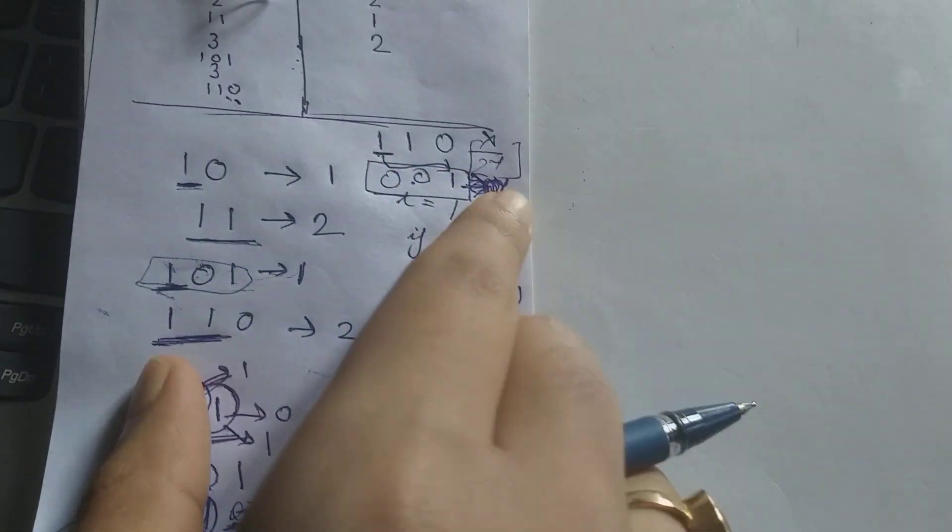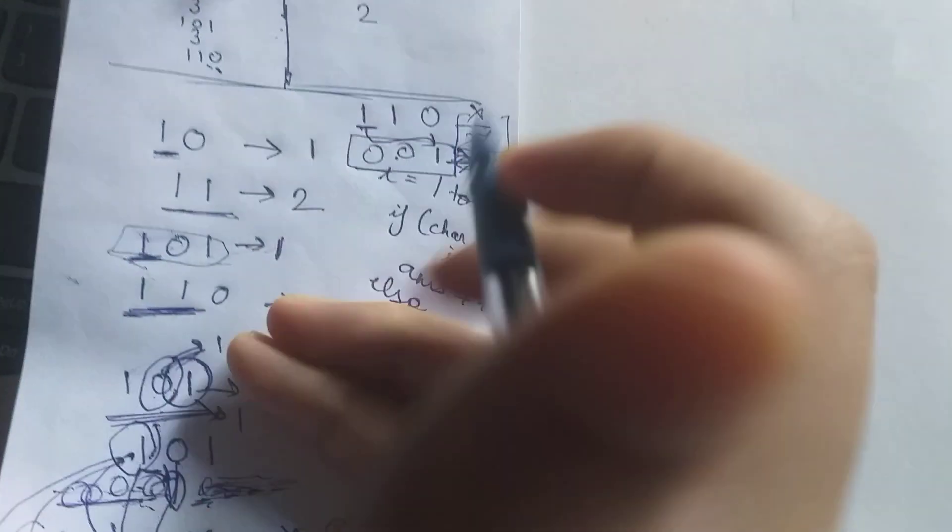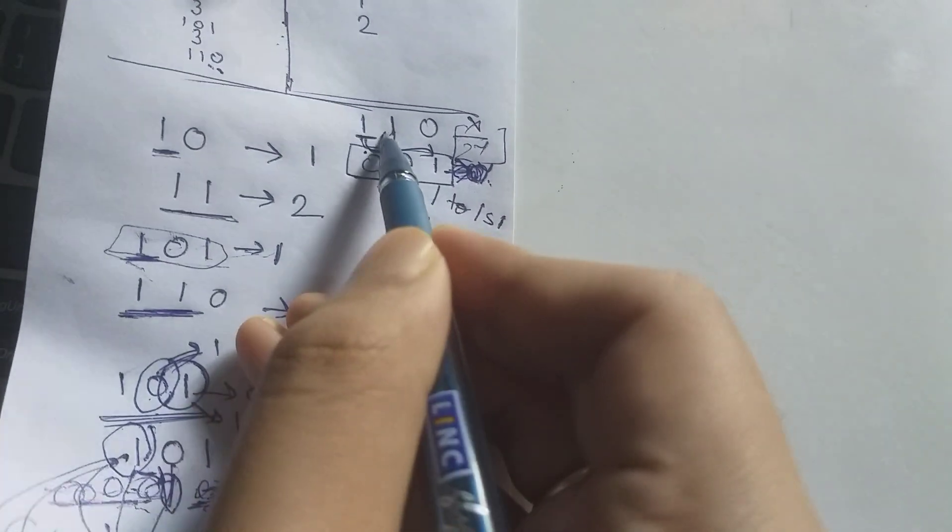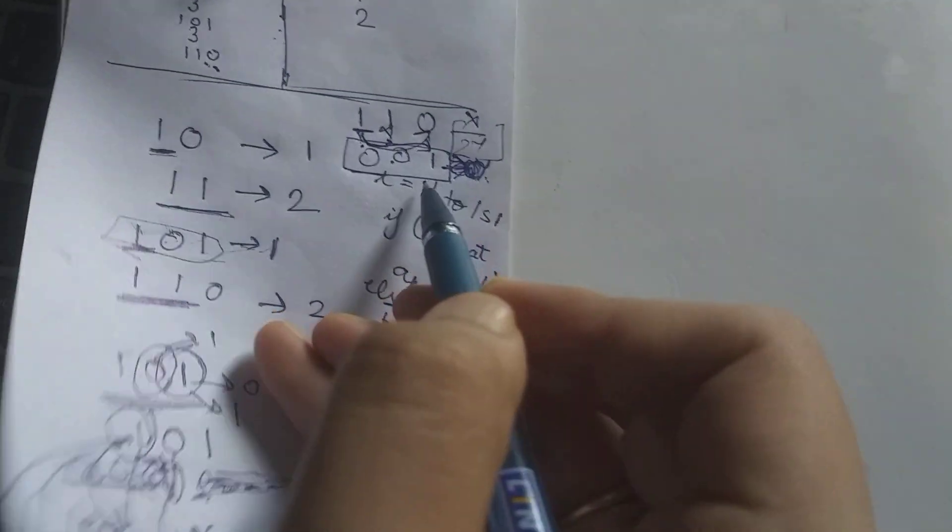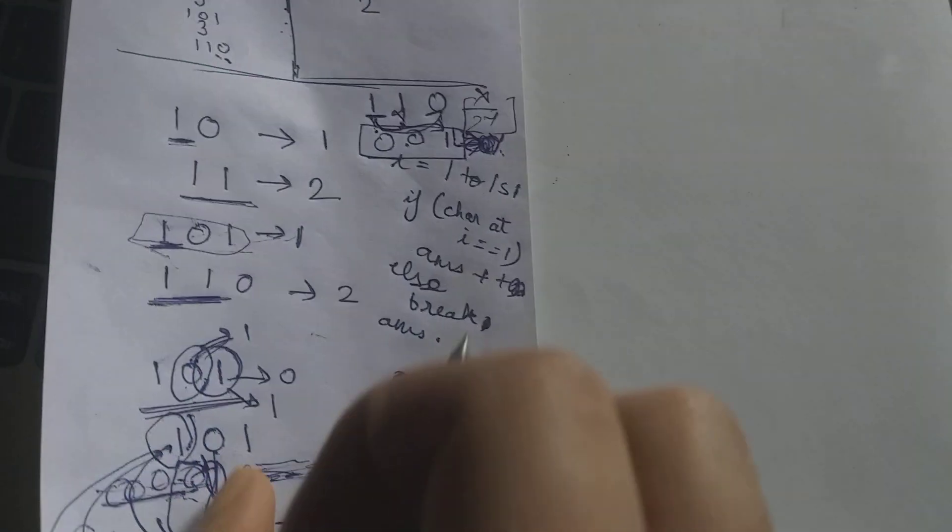Now the question is how many times do we need to right shift this? 1, 2. Two times. So I hope this is clear.